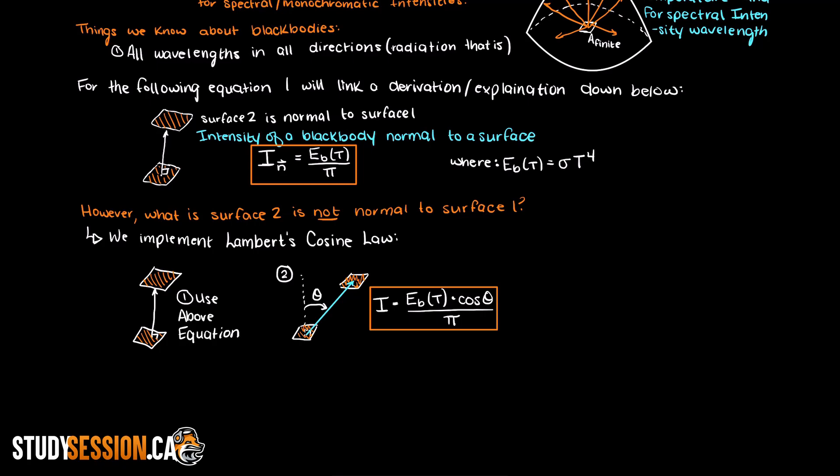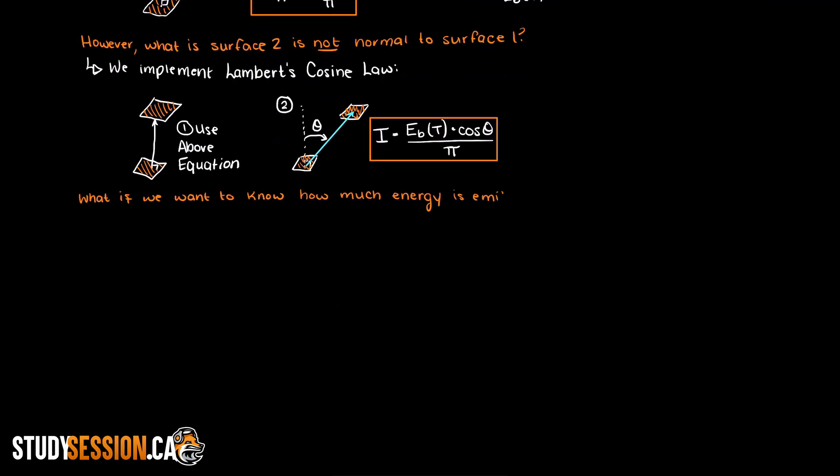So another thing of particular interest to us is how much energy is transmitted from surface 1 here to surface 2. Well if you remember from our previous solid angle video, the differential solid angle to our point in space is equal to the differential area over the radius squared.